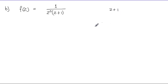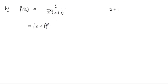For Part B, the term 1 over (z plus 1) is actually part of the power series already, so we can write this expression as (z+1)⁻¹ times, in brackets, 1 over z³. We write this conveniently this way because this z³ needs to be developed as a power series in terms of (z plus 1).